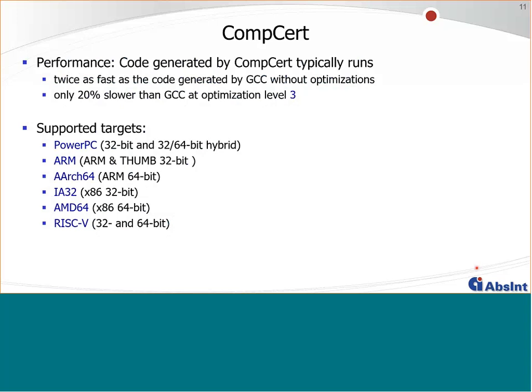Regarding performance: code generated by CompCert is about twice as fast as GCC with no optimizations (-O0). Compared to GCC at optimization level -O3 — representing high-performance compilers — CompCert is just 20% slower. So yes, it's slower, but we have the benefit of proven correctness. Supported targets include PowerPC 32-bit and 32/64-bit hybrid, ARM 64-bit, IA32, AMD64, and RISC-V. Regarding the C dialect, CompCert covers all C99 semantics with limited exceptions: no unstructured switch statements, no variable-length arrays, and setjmp/longjmp is not covered by the formal proof.